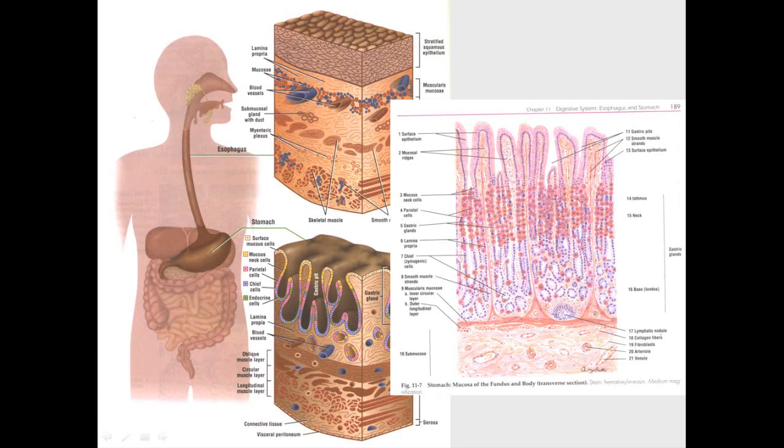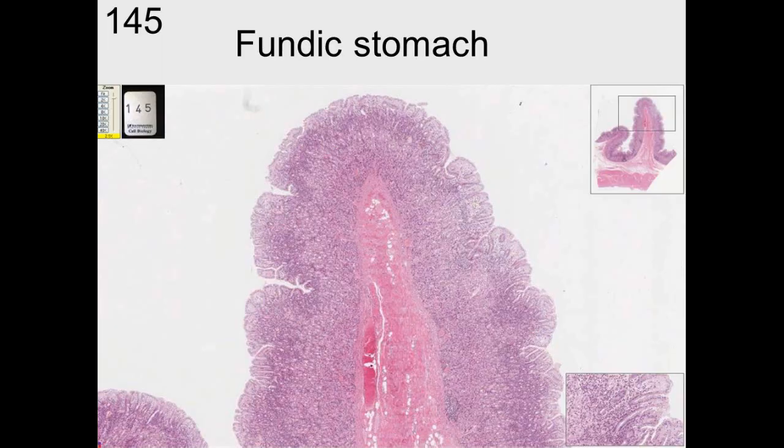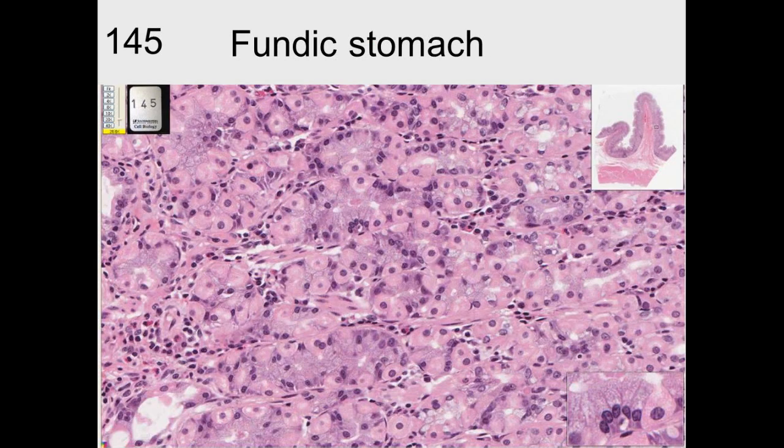This is another view from an atlas on the digestive tract. And it starts out with the trachea, the esophagus, and then from esophagus it goes to the stomach. So when you get, so you have stratified squamous in the beginning, and then you have simple columnar. And here we see slide 145, which has the fundic stomach in there.